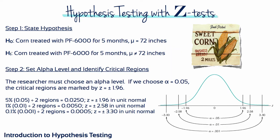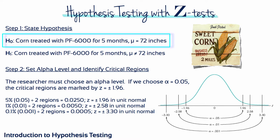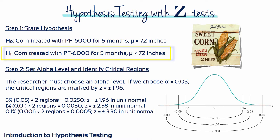Step 1: State the Hypotheses. The null hypothesis says that corn treated with Plant Food 6000 for 5 months has a mean equal to 72 inches — in other words, the fertilizer has no effect. Whereas the alternative hypothesis says that corn treated with Plant Food 6000 for 5 months is not equal to 72 inches. Maybe it's taller, maybe it's shorter. Step 2: Researchers must choose an alpha level. Let's say we choose an alpha of 5%, so the critical regions are marked by the z-score values plus or minus 1.96.